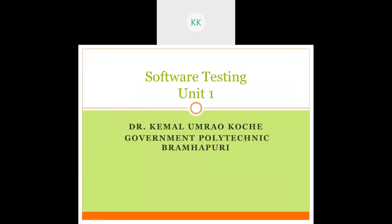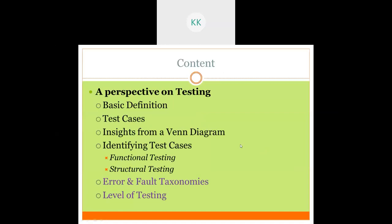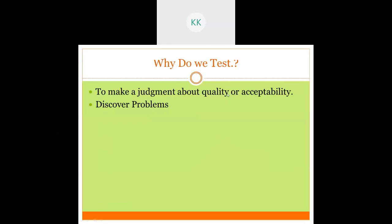Good morning friends, I am Dr. Kemal Kochi. Today we will be seeing Software Testing Unit 1. The contents of today's lecture include a perspective on testing — basic definitions, test cases, and from a Venn diagram we will see how to categorize different types of testing and what domain they affect. Later we will cover identifying test cases, functional testing, structural testing, errors and faults, and different levels of testing.